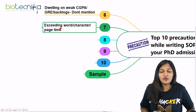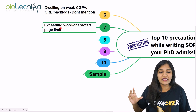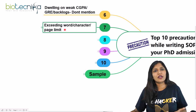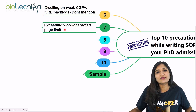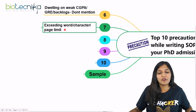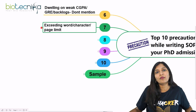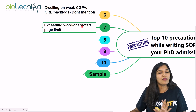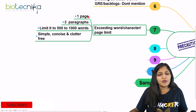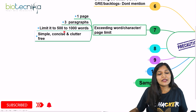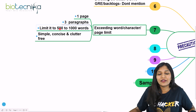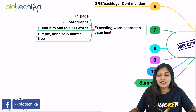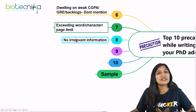The seventh point: every scholarship or university has a specific word limit, character limit, or page limit. Never exceed it. Some universities won't allow you to upload the file if it exceeds the maximum; others will show you how many characters or words you've used. Always stick to one page, three paragraphs, 500 to 1000 words. Keep it simple, concise, and clutter-free.